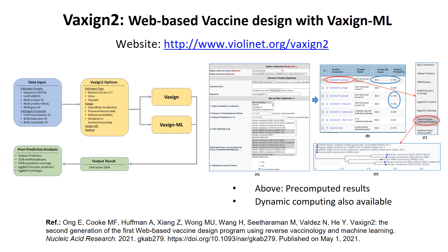We also recently generated something called Vaxign 2, a web-based vaccine design program. It includes the previous Vaxign and Vaxign-ML together. It has a very nice interface you can try. It has pre-computed results, and you can also do dynamic analysis — you can input your protein sequence and we can do the analysis for you.